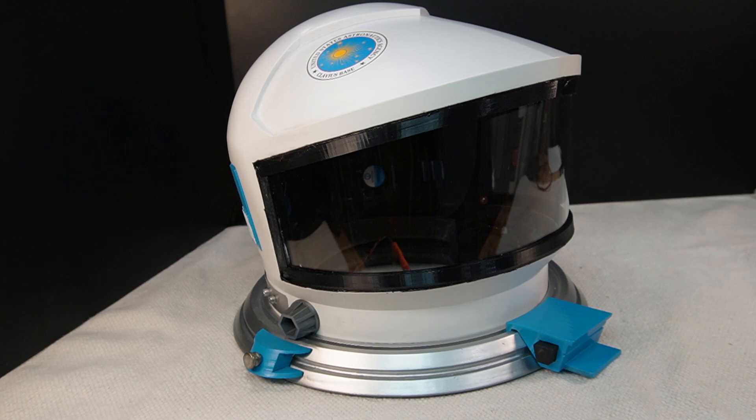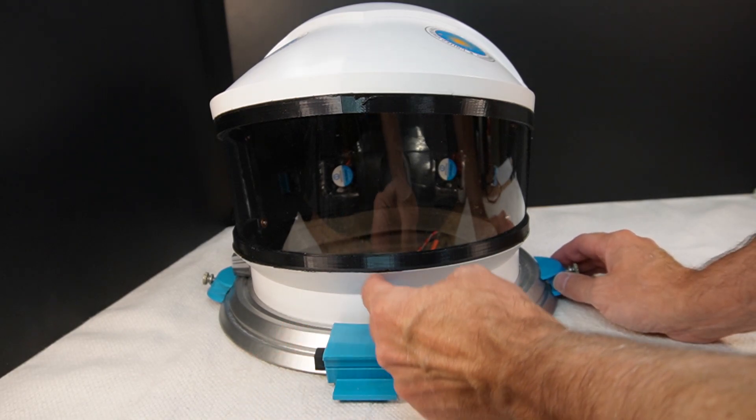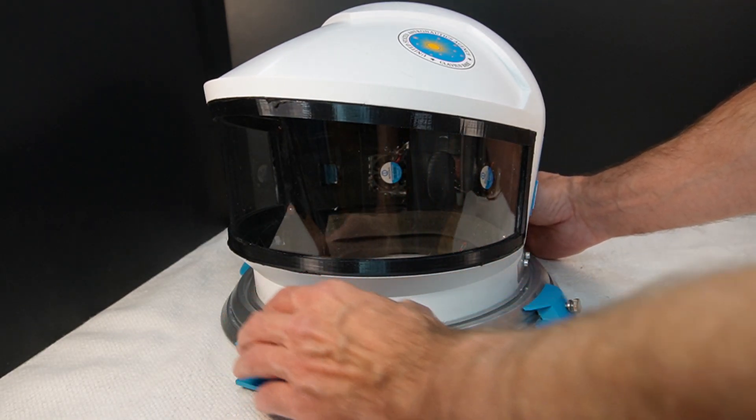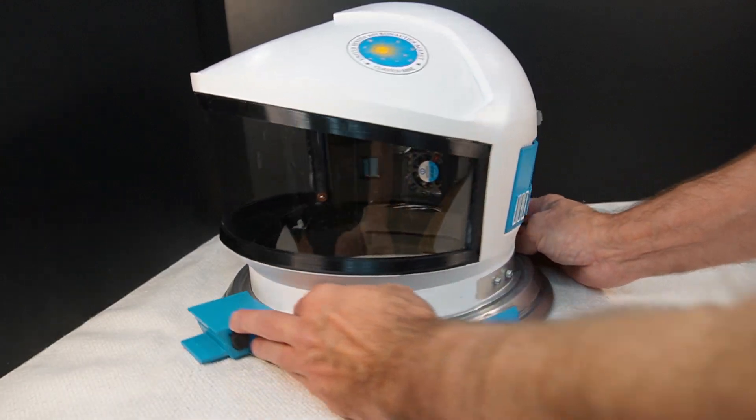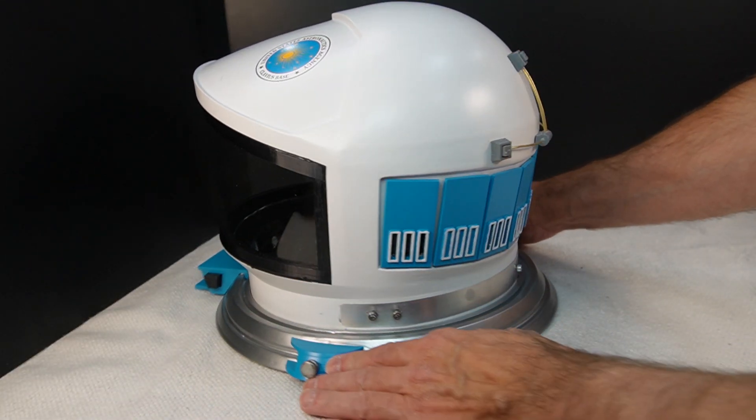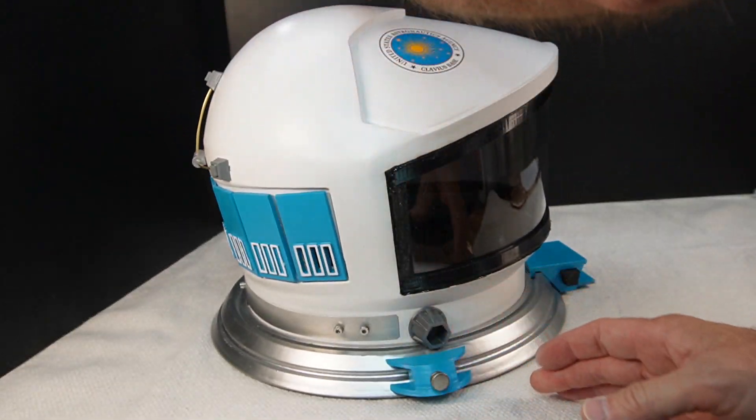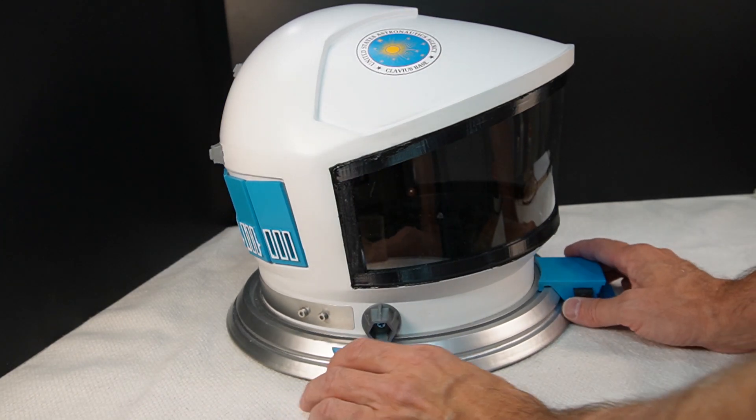I printed this on a Creality CR-10 printer which is a 300 by 300 millimeter bed that goes 400 millimeters high. Even with the size of that bed, this had to be printed in a number of pieces. It was split here and then this bottom piece, so you have two pieces here. Then the back piece, the rear bottom of the helmet and then the rear top of the helmet, and then the visor of the helmet from here forward.